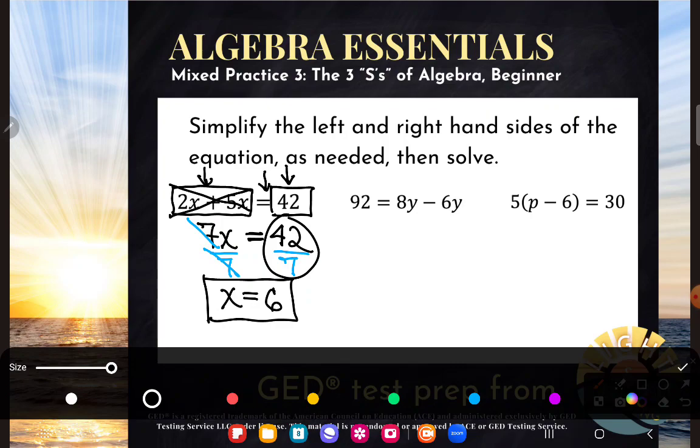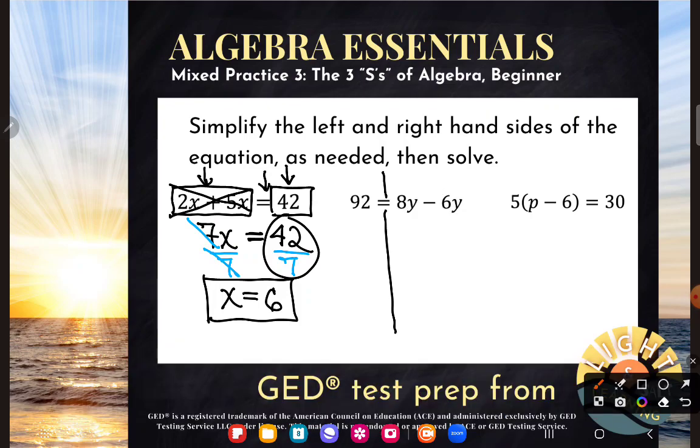Look at the next example. 92 is equal to 8y minus 6y. Again, for us new and struggling students, put that line through that equal sign and examine the sides one at a time. So just examine the left-hand side. Is there any work to do? Well, no, I can't make that any simpler. 92 is 92 is 92.